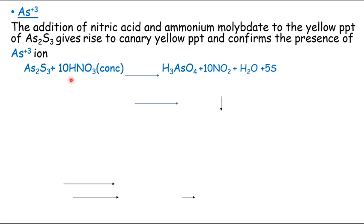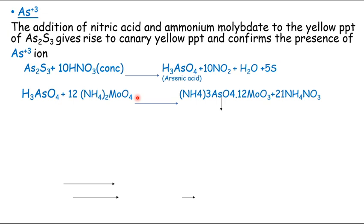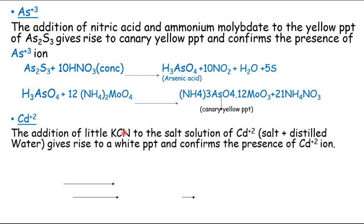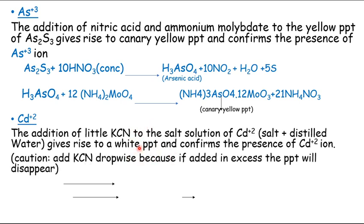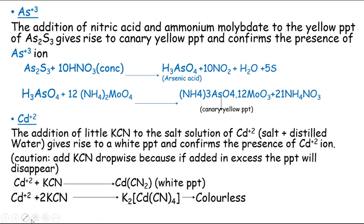For cadmium divalent ion, the addition of a little KCN dropwise to the salt solution gives a white precipitate and confirms the presence of cadmium. We have to add this dropwise because if it is added in excess, we will not get any colored precipitate — the precipitate will in fact disappear, giving a colorless compound instead.